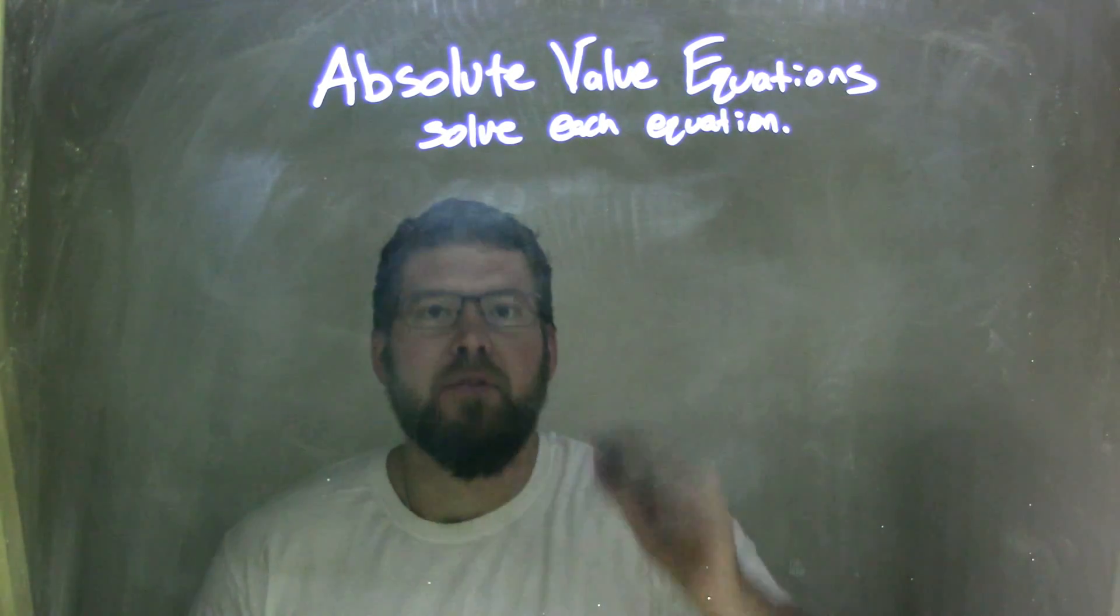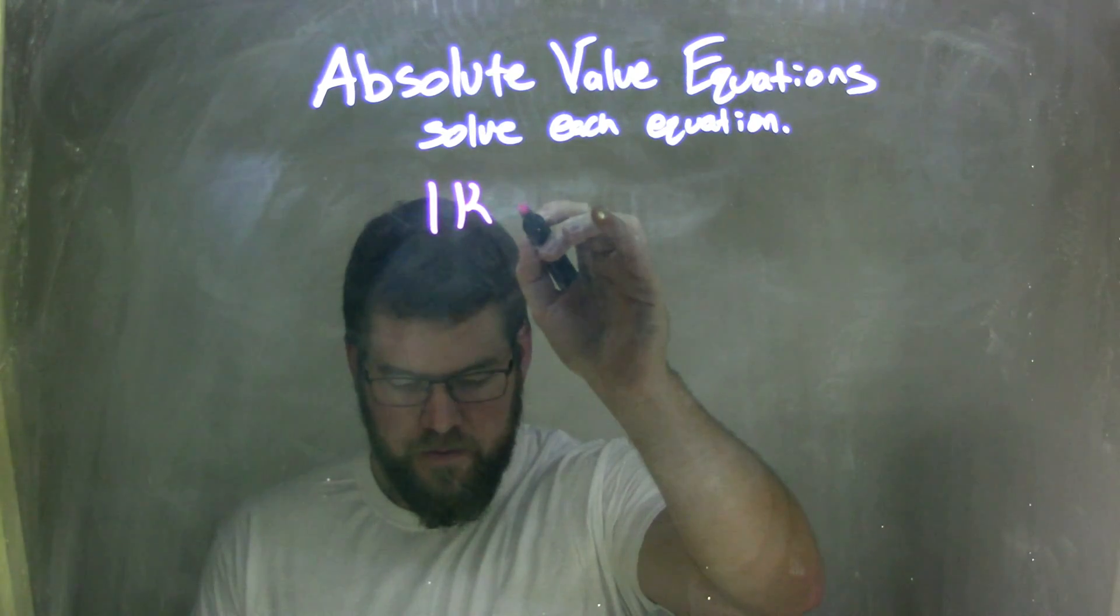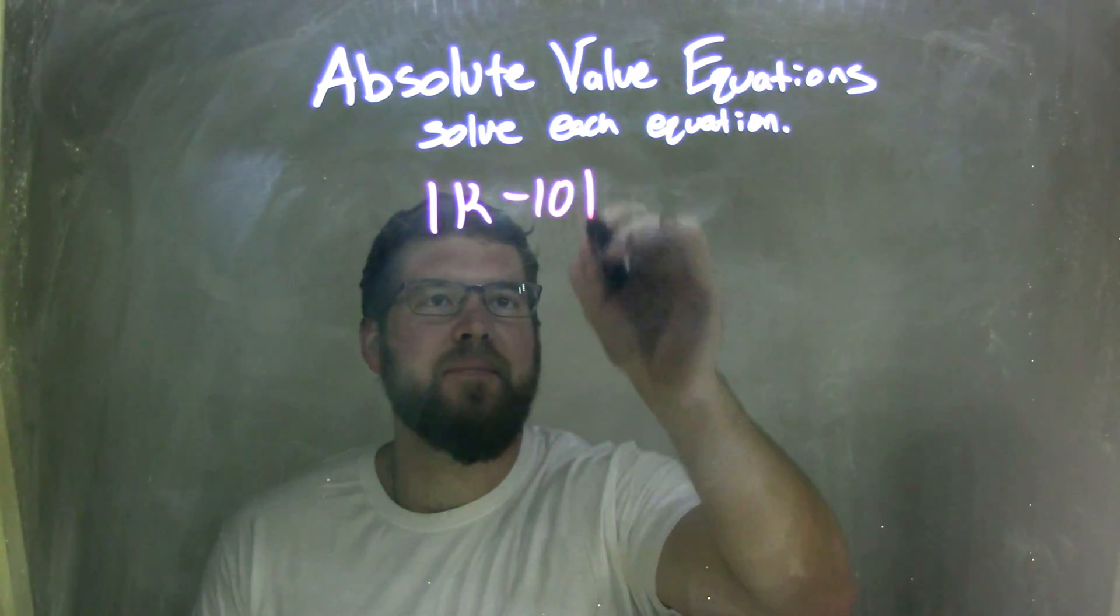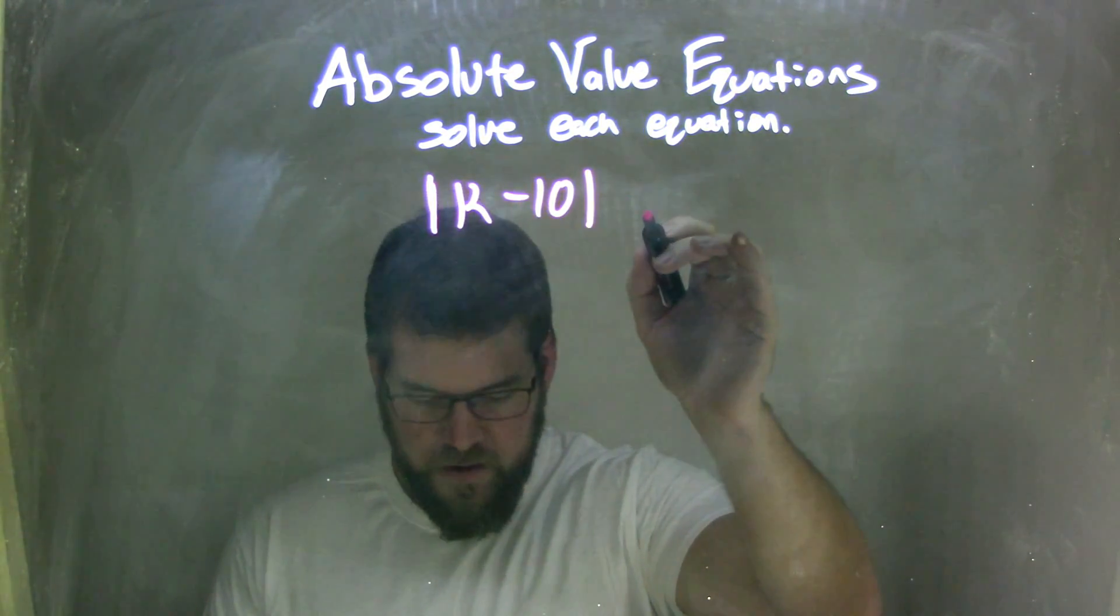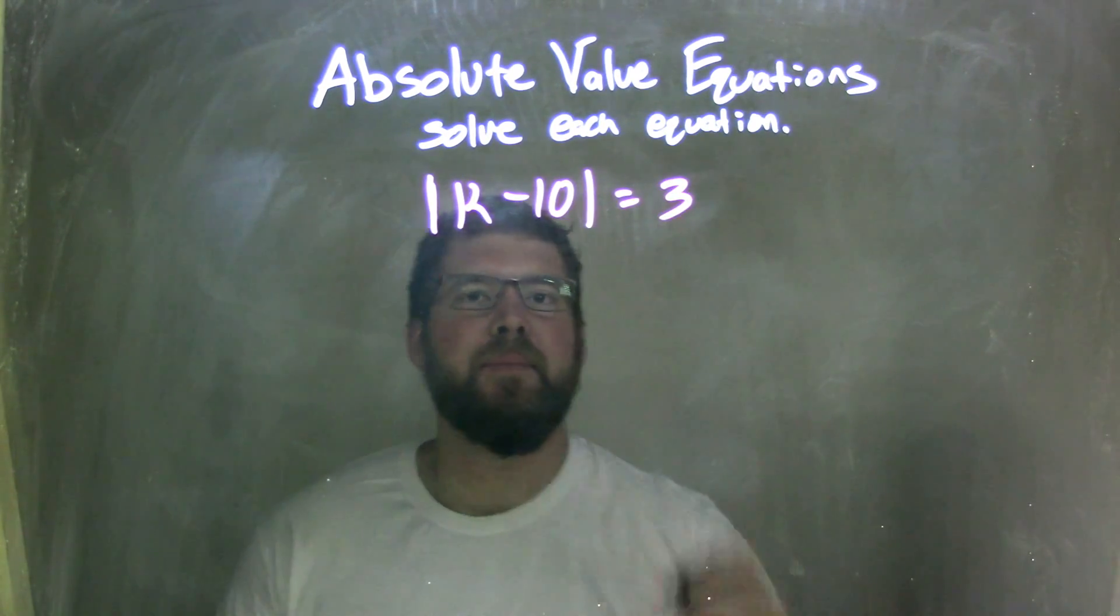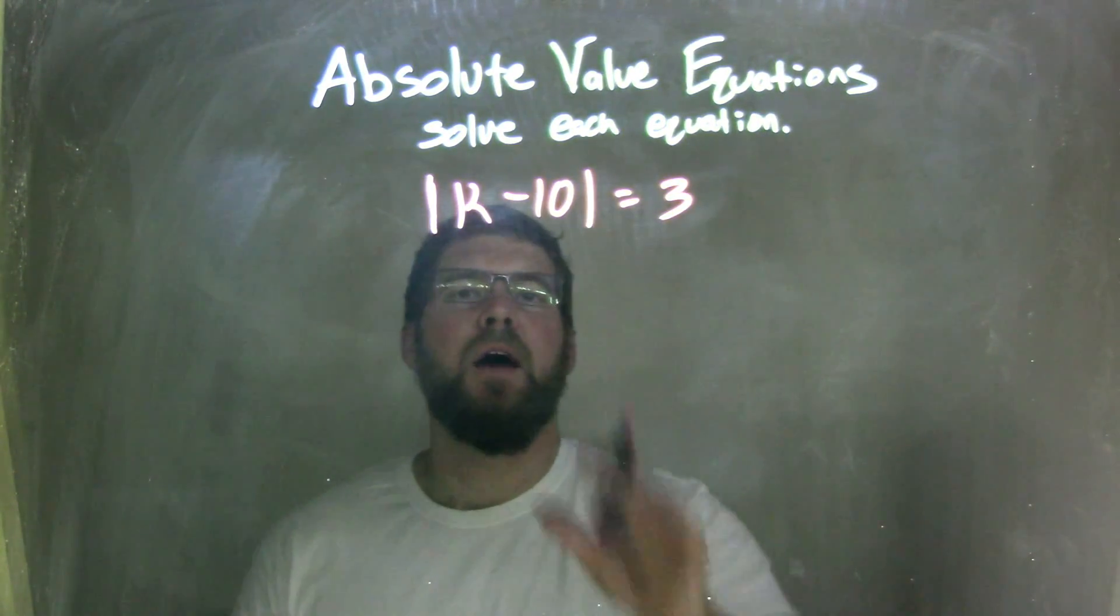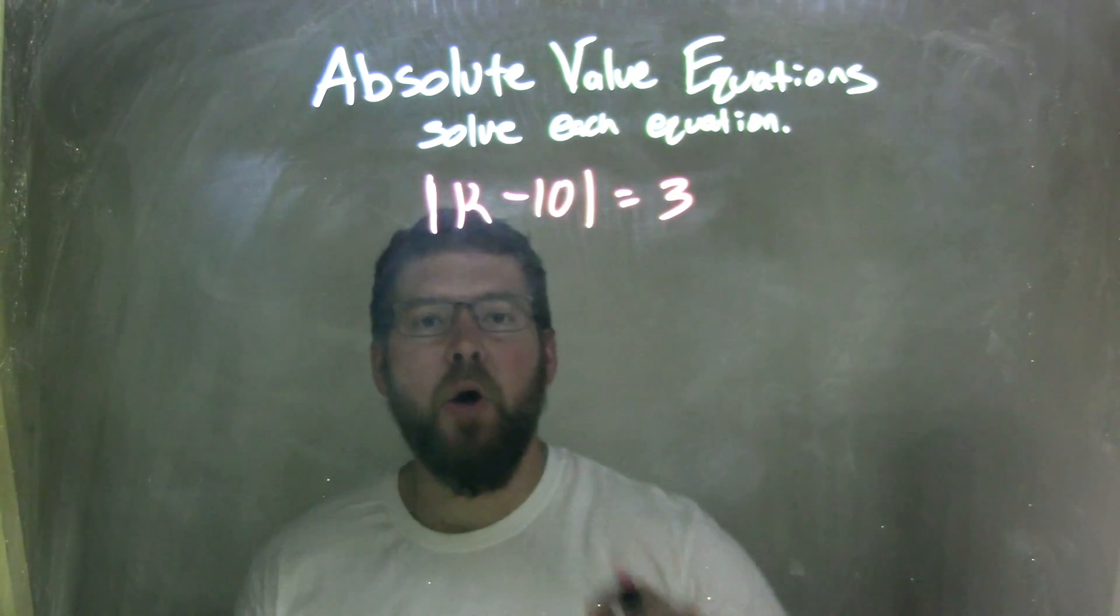So if I was given this equation, absolute value of k minus 10 equals 3. So absolute value of k minus 10 equals 3. Well, I need to isolate the absolute value. Already done.